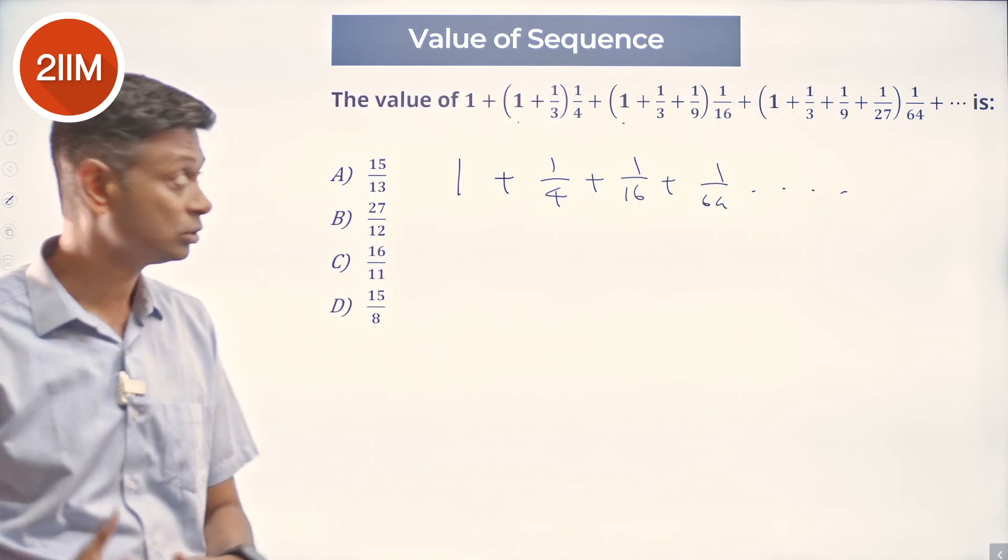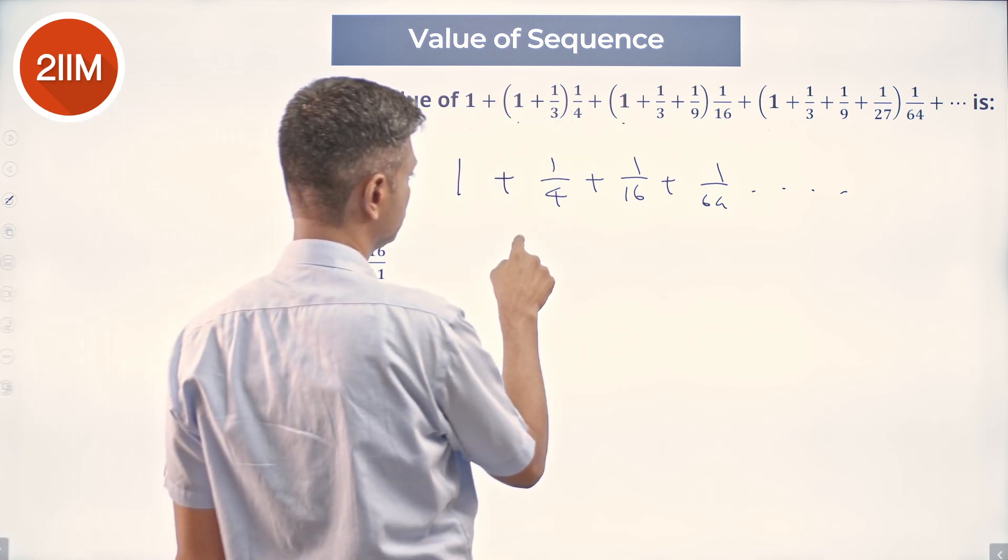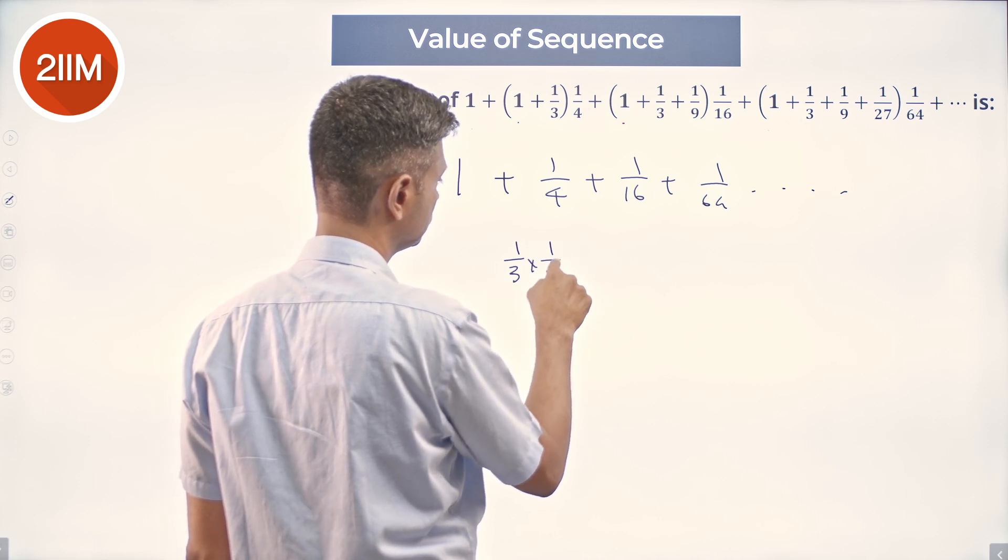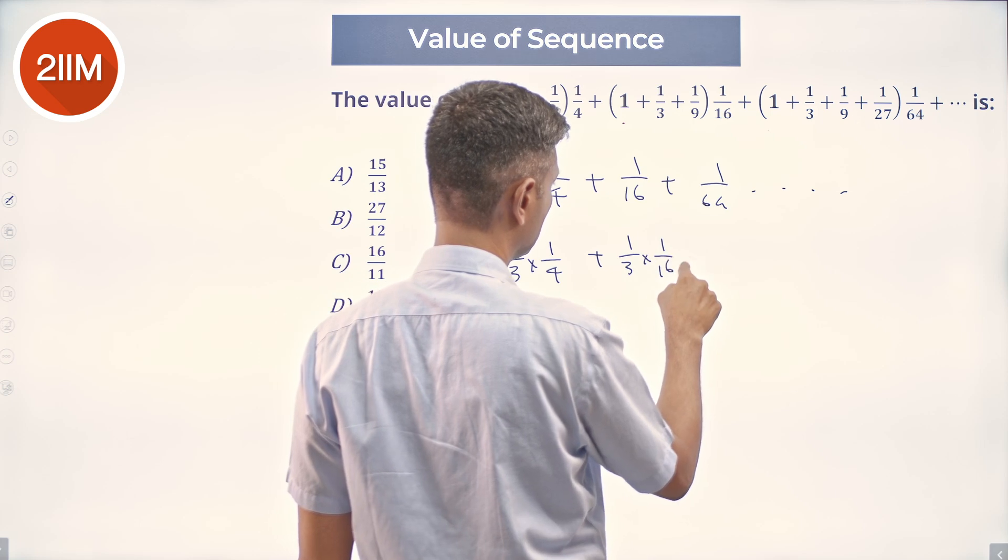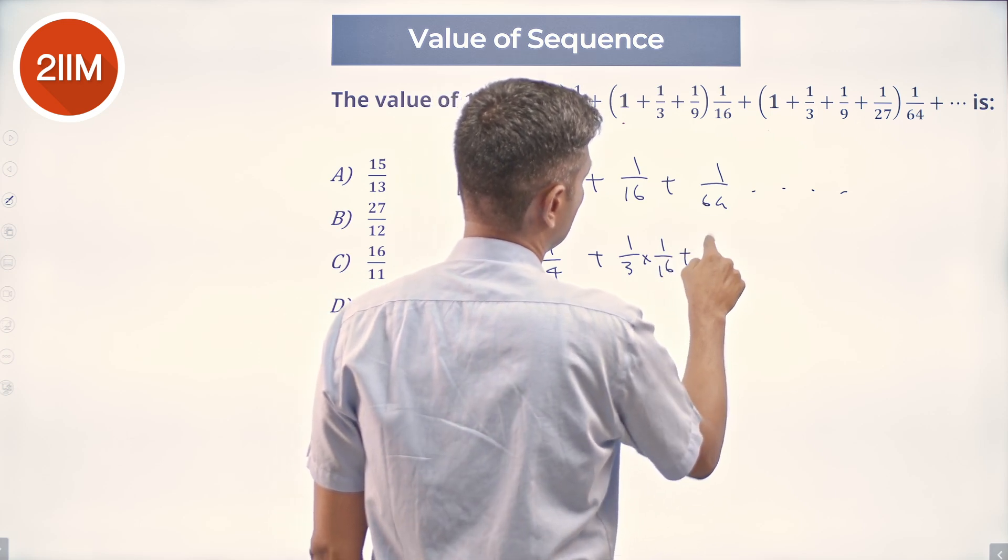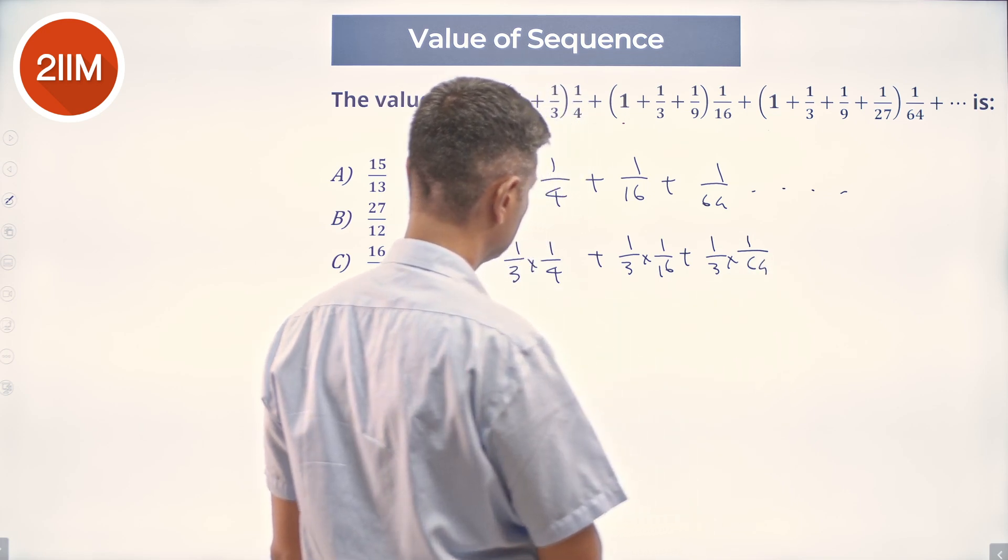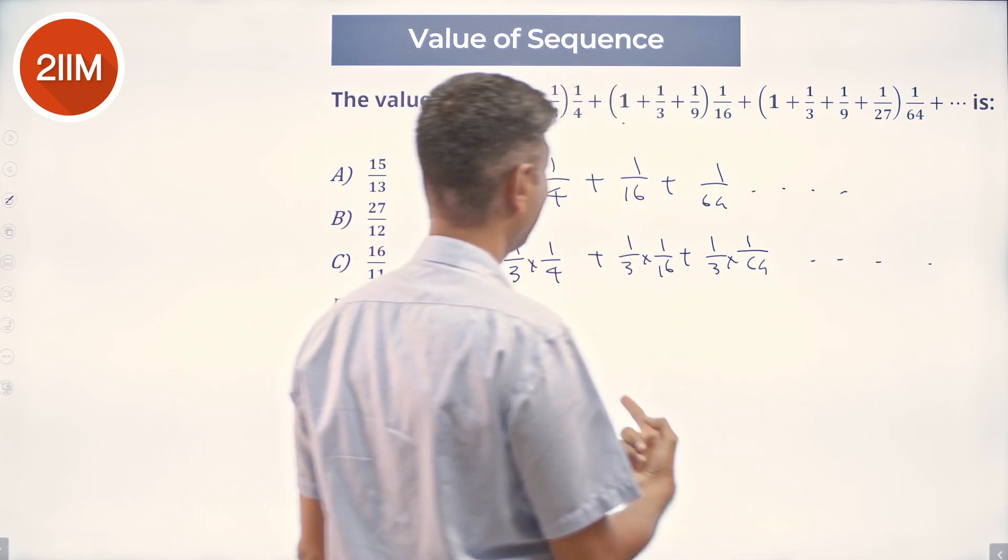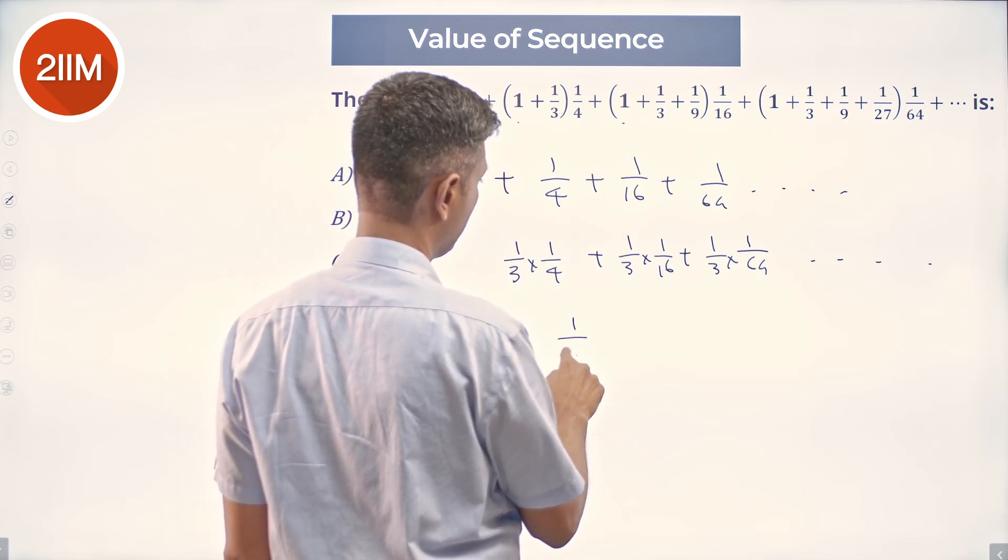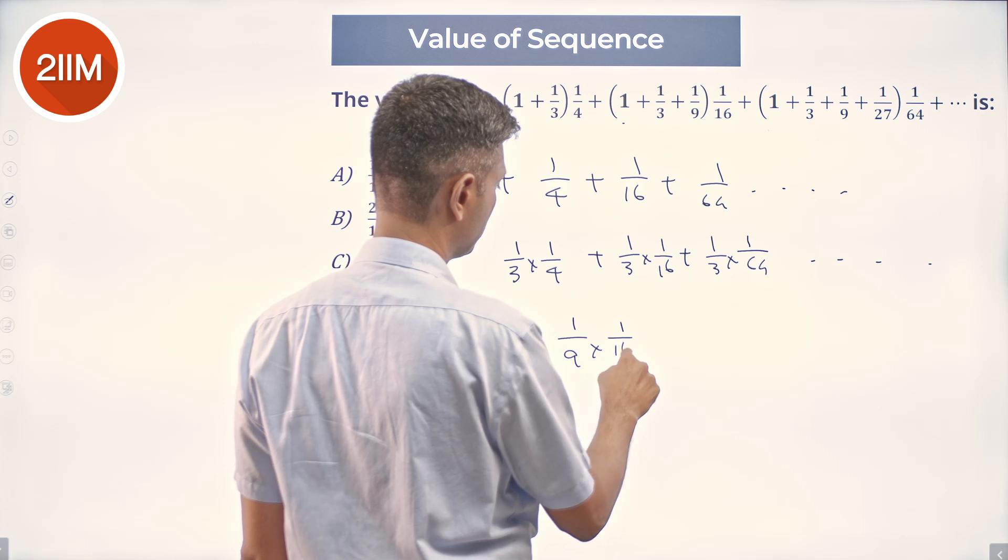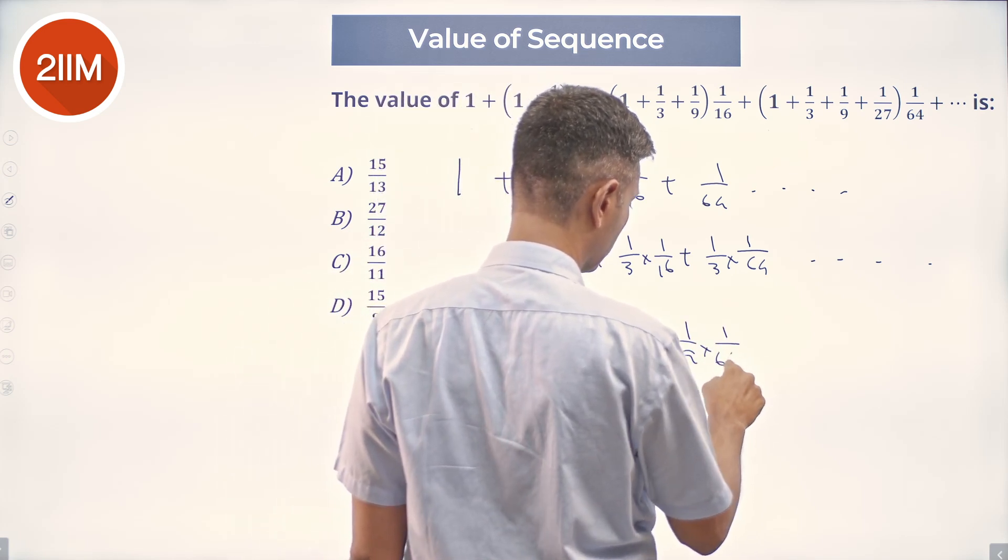Then second term: 1/3 into 1/4 plus 1/3 into 1/16 plus 1/3 into 1/64 and so on. So next terms of the sequence: 1/9 into 1/16 plus 1/9 into 1/64 and so on.